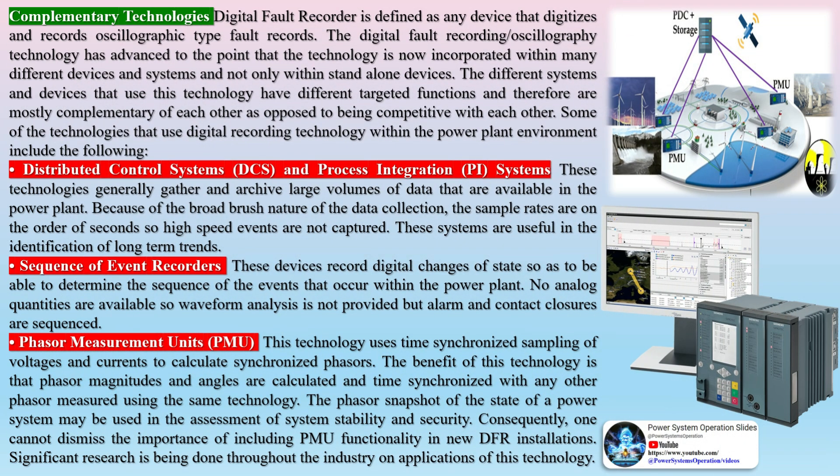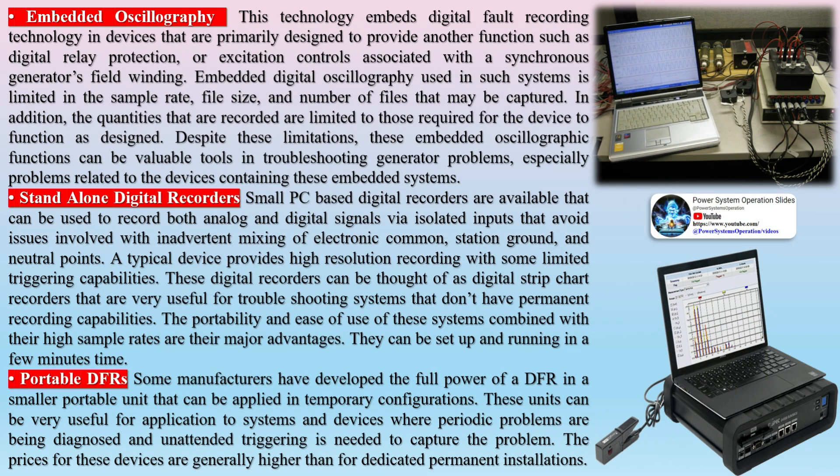A typical magnetic tape-based analog fault recorder provided very limited insight into the transient behavior of the power systems they monitored. Consequently, AFRs were installed on only the most critical substations and generating facilities — only those sites could justify the high cost of acquiring a limited record of power system transient behavior. AFRs provided too little data too late to be of use for most power system problem-solving issues. Until a reliable electronics platform with improved triggering, data storage, and transmission capabilities was available, the importance of AFRs to power system diagnostics was limited.